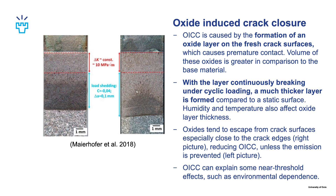This oxide escape will reduce OICC, but we can prevent this emission by using tape to seal the crack from its sides, making it so that no oxides can escape from the sides. This leads to a much thicker oxide layer that is also homogeneous in the thickness direction, making OICC far more prominent. OICC can explain some near-threshold effects such as environmental dependence.